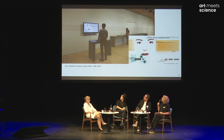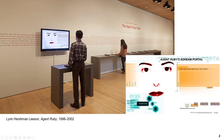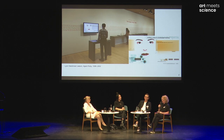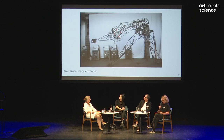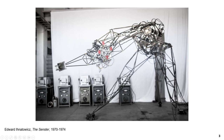Also pioneering artist Lynn Hirschman-Leeson and her chatbot project Agent Ruby — an online project that people could engage with, of course also in the tradition of Weizenbaum's ELIZA project from the 60s. And then, with artists working with machine vision and robotics: pioneer Edward Ihnatowicz and the Senster project he developed for the Evoluon Pavilion of Philips in Eindhoven, active from 1970 to 1974. So, AI and robotics.